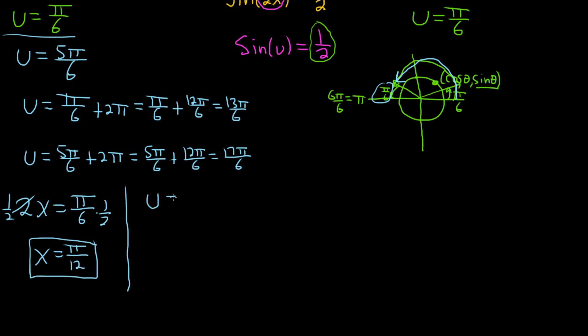For the next one, we'll do u equals 5π over 6. And just like before, 2x is equal to 5π over 6. Multiply by 1 half. You can divide by 2. It's just cleaner to multiply. So x equals 5π over 12.